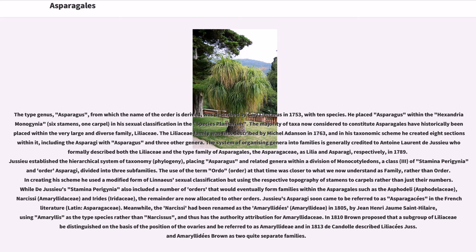The majority of taxa now considered to constitute Asparagales have historically been placed within the very large and diverse family Liliaceae. The Liliaceae family was first described by Michel Adanson in 1763, and in his taxonomic scheme he created eight sections within it, including the Asparagi with asparagus and three other genera. The system of organizing genera into families is generally credited to Antoine Laurent de Jussieu, who formally described both the Liliaceae and the type family of Asparagales, the Asparagaceae, as Lilia and Asparagi respectively, in 1789. Jussieu established the hierarchical system of taxonomy, placing asparagus and related genera within a division of monocotyledons, divided into three sub-families.